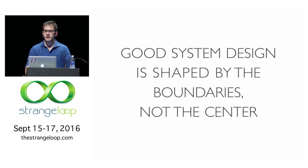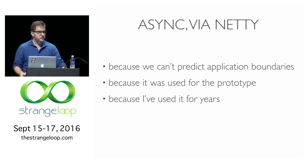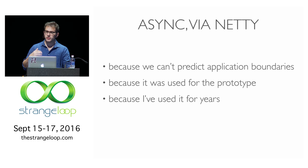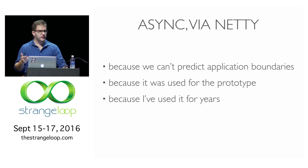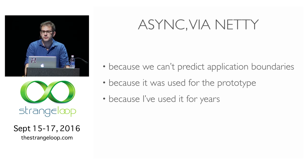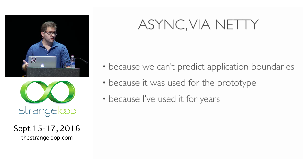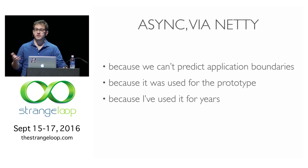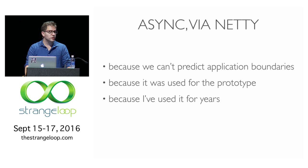One of the first decisions we made, shaped by this question of extremes, is to make it an async server. This is a bit of a religious issue in the Java ecosystem because you can do both — you can have a thread per request, or you can have this more complex async model which has less cost associated with each in-flight request it's handling. We chose async not because it's the one true approach, but we chose it because we don't control the application boundaries either now or in the future.